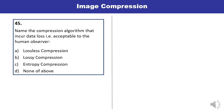Question 45: Name the compression algorithm that incurs data loss — where loss of information takes place. That type of compression algorithm is known as lossy compression. B is the correct answer.